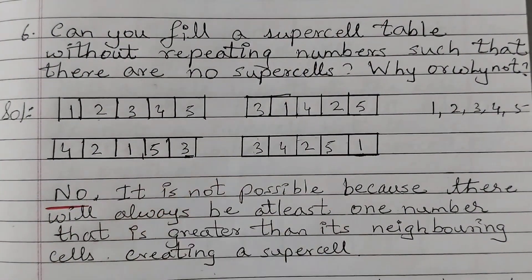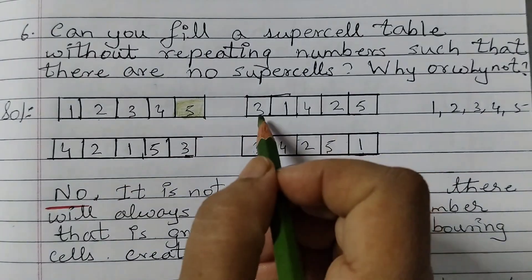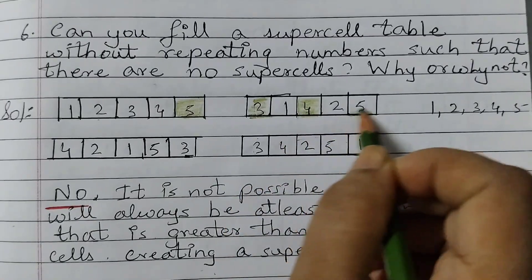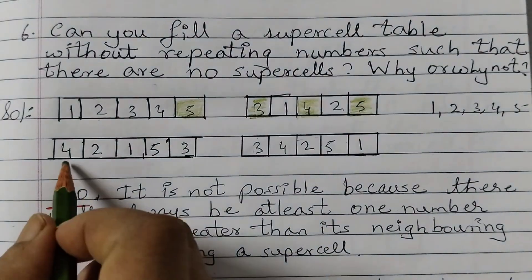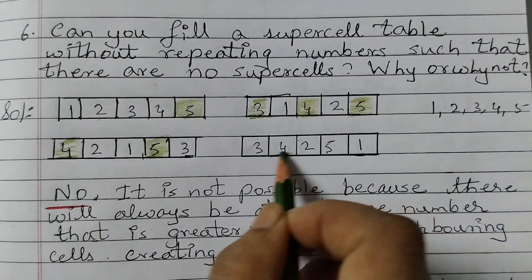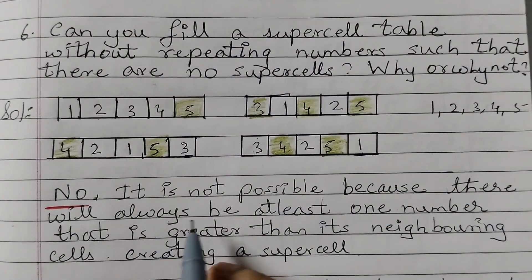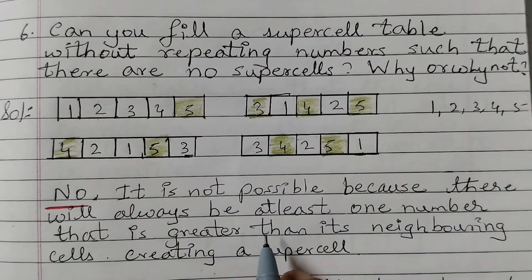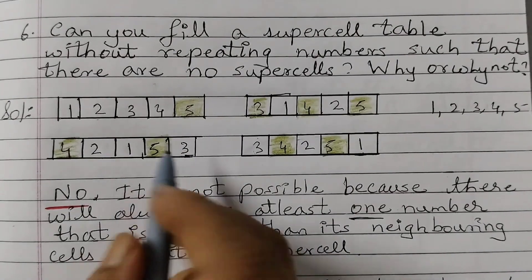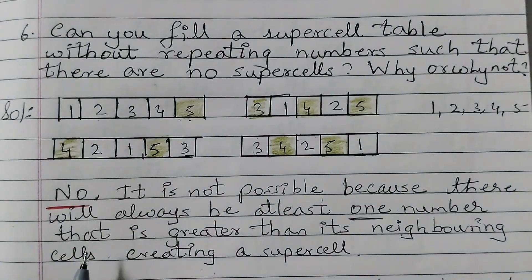Now let's check if there is any row where there is no supercell. If I see here, 5 is greater than 4 so that's a supercell. 4 is greater than its adjacent numbers, and 5 is also a supercell in other rows. So the answer is no — it is not possible, because there will always be at least one number that is greater than its neighboring cells, creating a supercell. The largest number always creates a supercell.